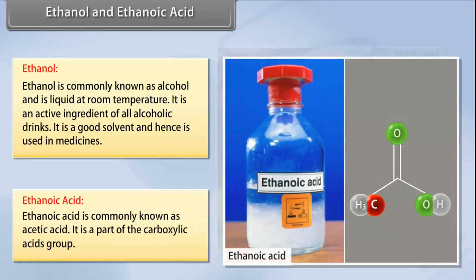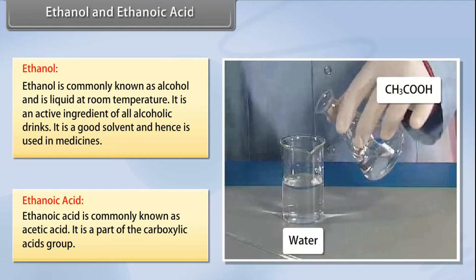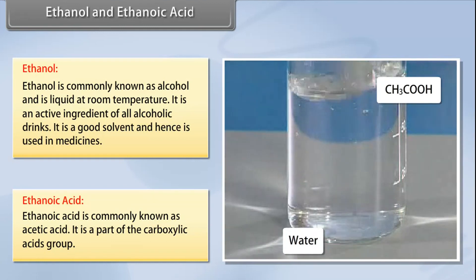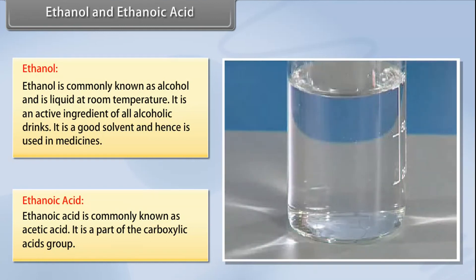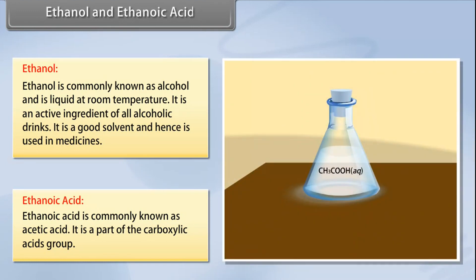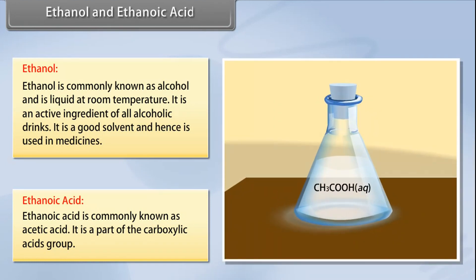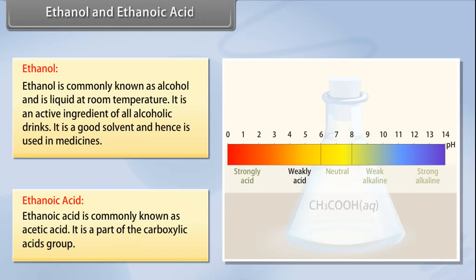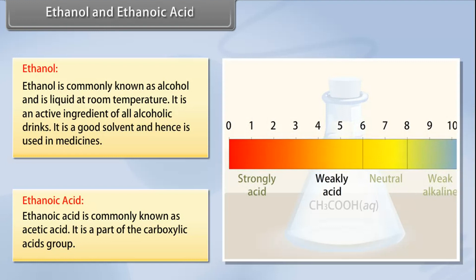Ethanoic acid: Ethanoic acid is commonly known as acetic acid. It is a part of the carboxylic acid group. When 5-8% solution of acetic acid is mixed in water, it forms a substance called vinegar. The melting point of pure ethanoic acid is 290 Kelvin. Because of this property, it freezes during winter and hence is also known as glacial acetic acid. Carboxylic acids are characterized by special acidity. However, as carboxylic acids are not ionized, they are weak acids.